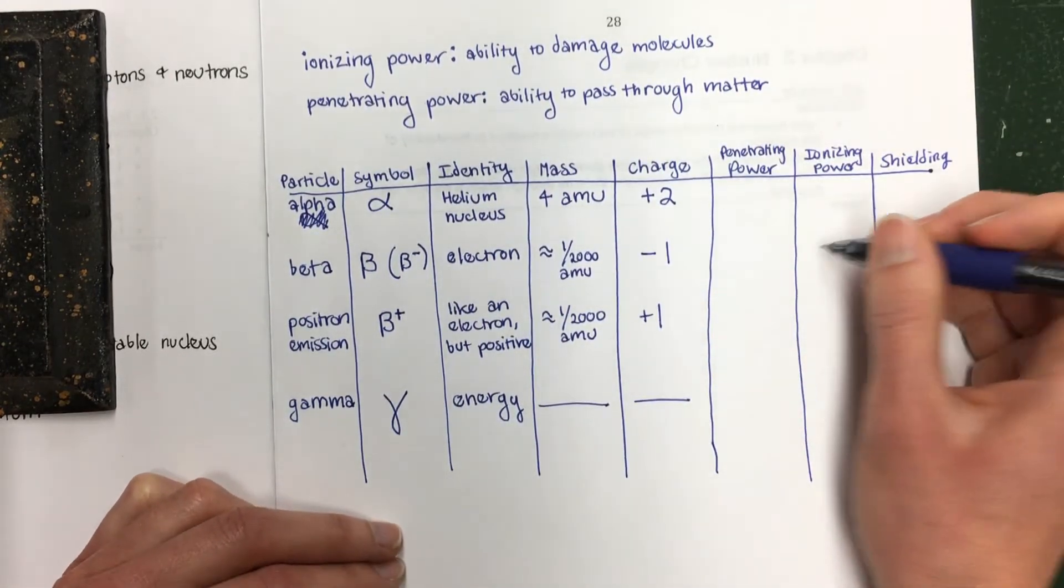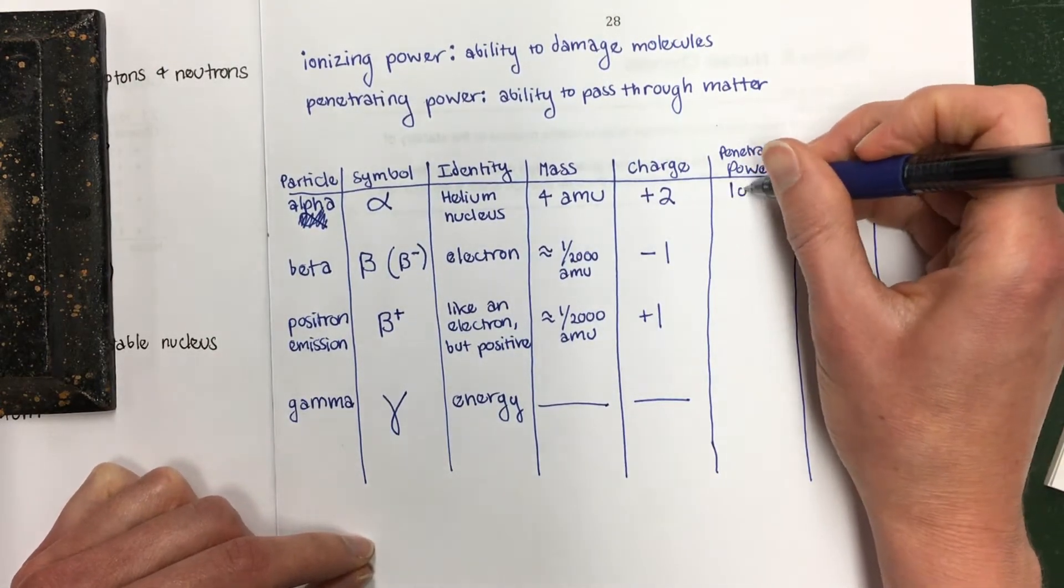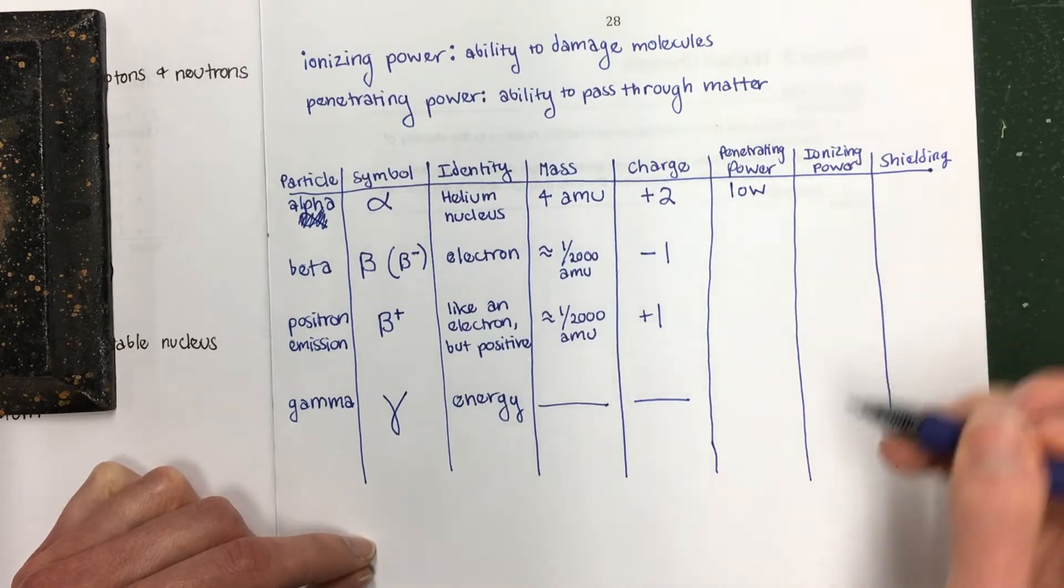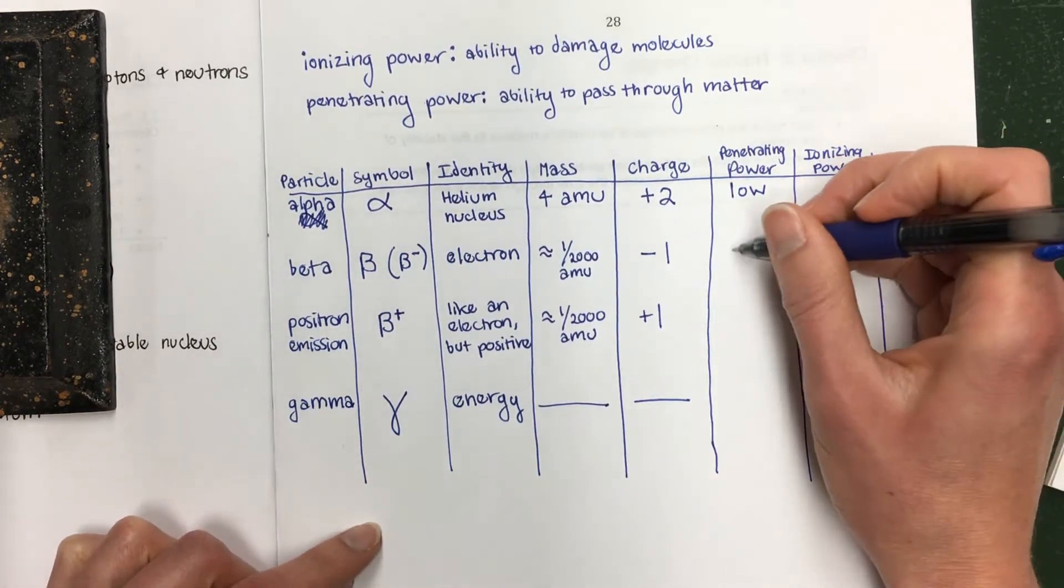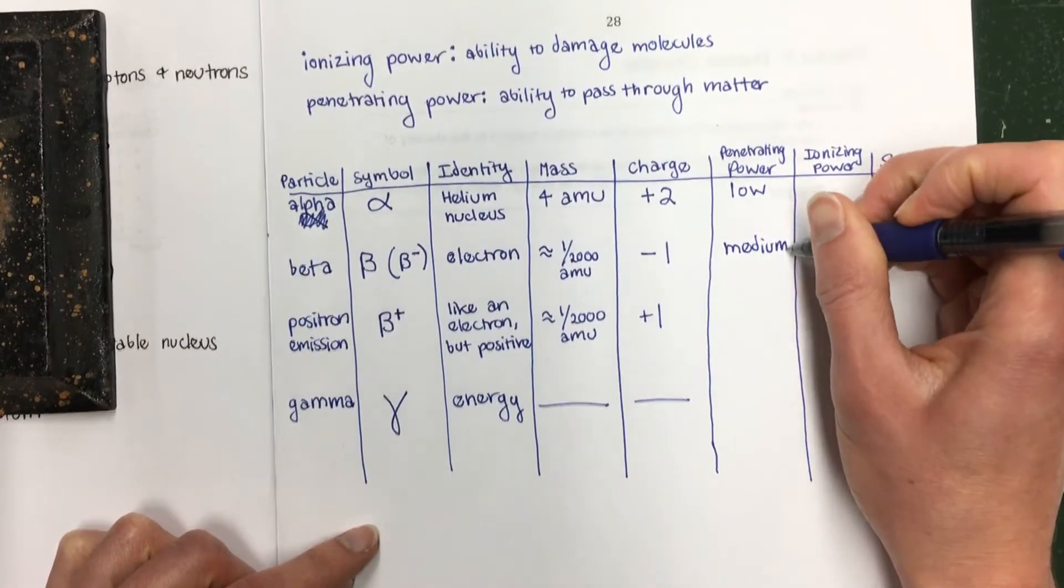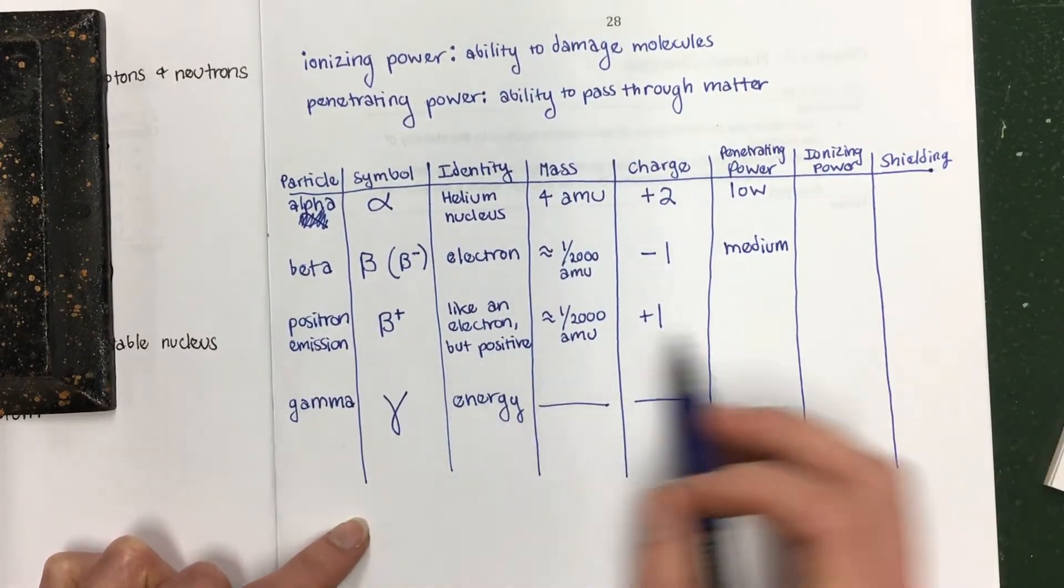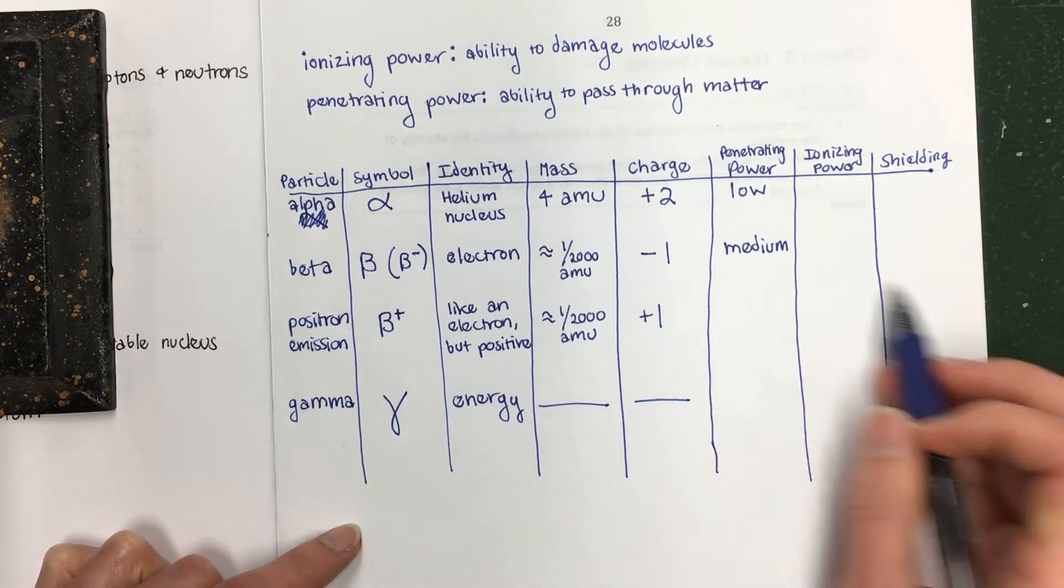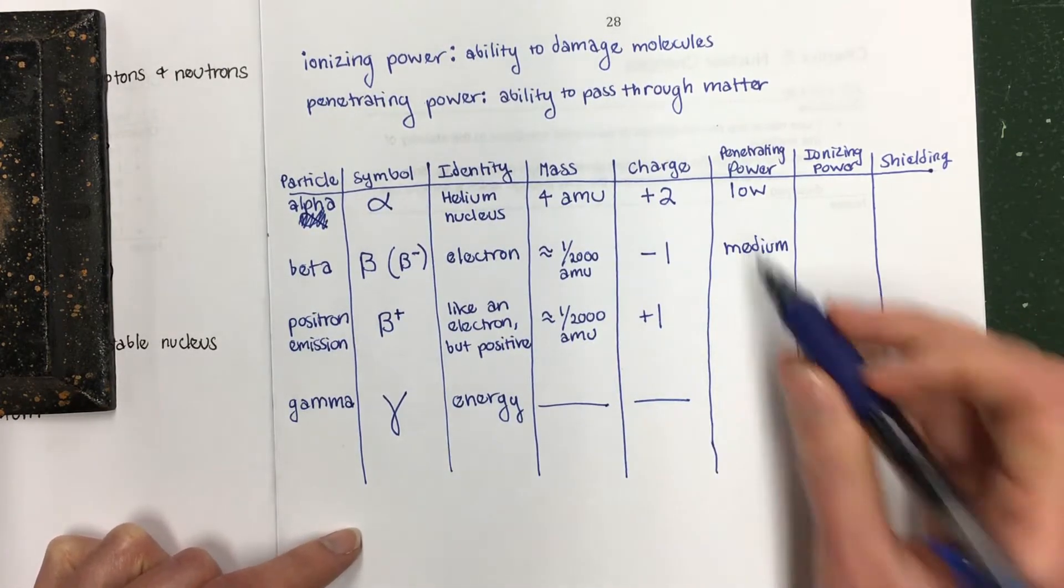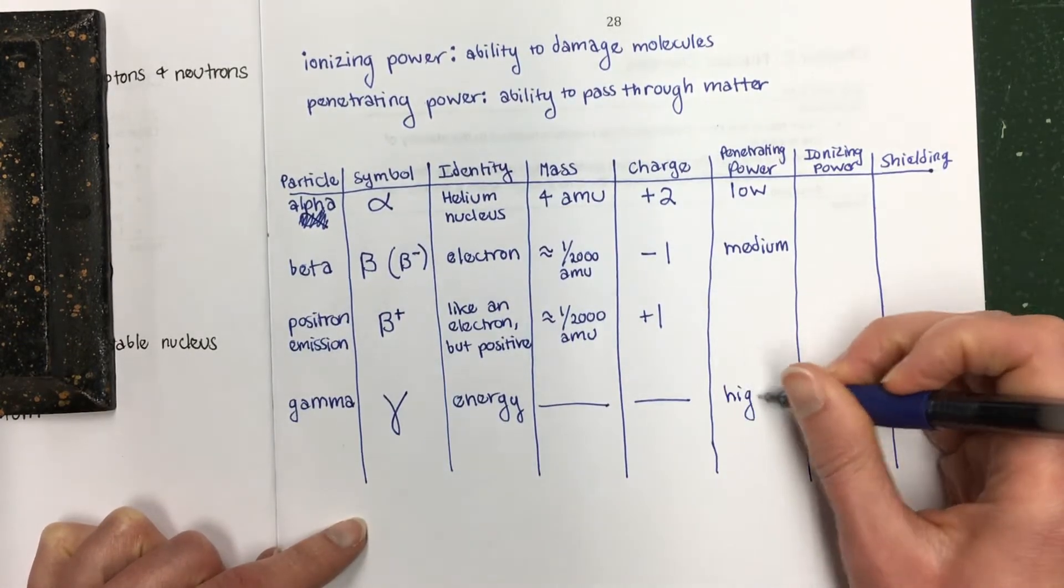Penetrating power. Alpha particles are pretty big, so that means they cannot penetrate things very well. They don't go through things. So penetrating power is low. For beta, it's medium. Positrons get a little bit complicated with some of this stuff, so I'm not going to worry about having you know these things for positrons. But if you want to talk to me, I can tell you more about that. Gamma rays are very penetrating. They can go through a lot of things.